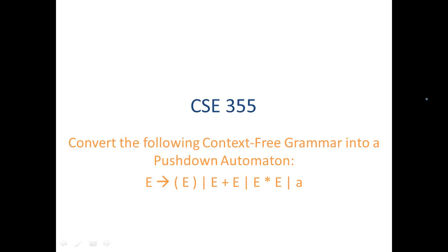Our grammar has variable e and four rules: e goes to left parenthesis e right parenthesis, e goes to e plus e, e goes to e star e, or e goes to a.